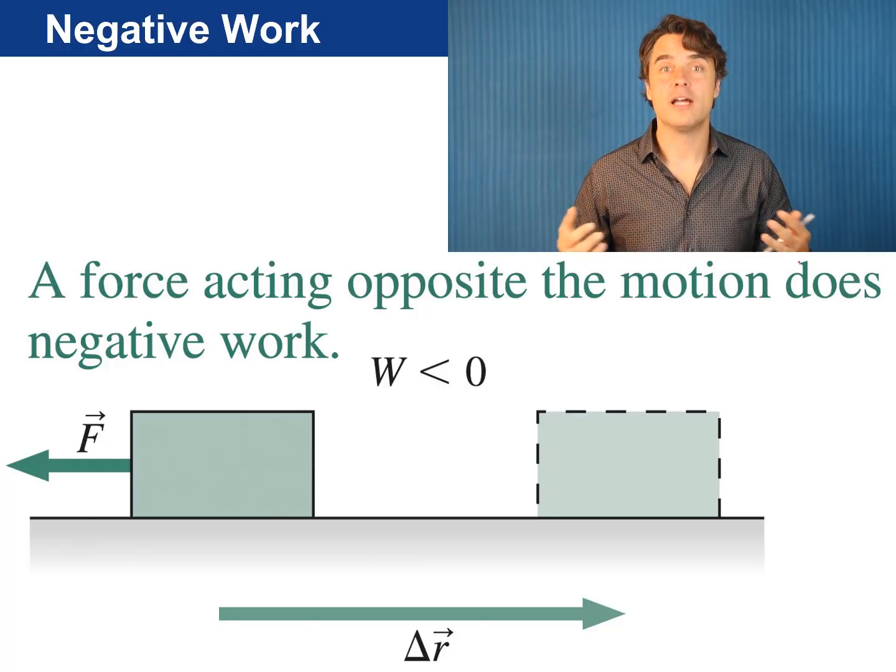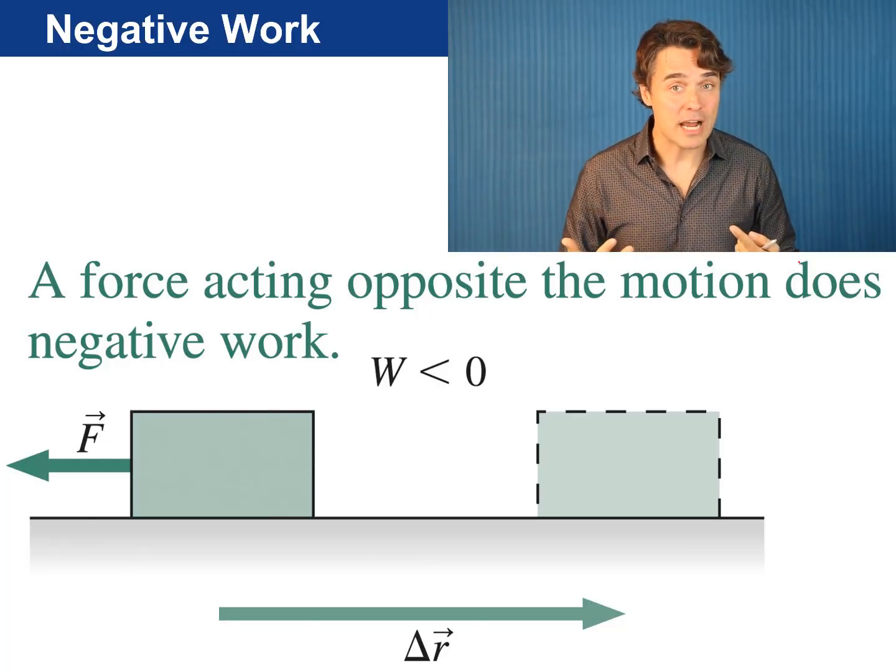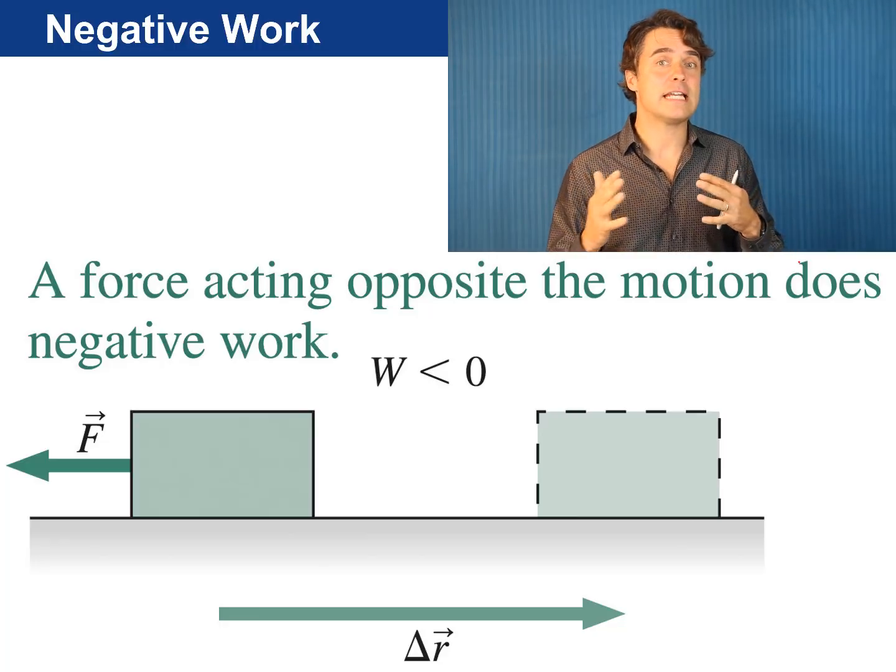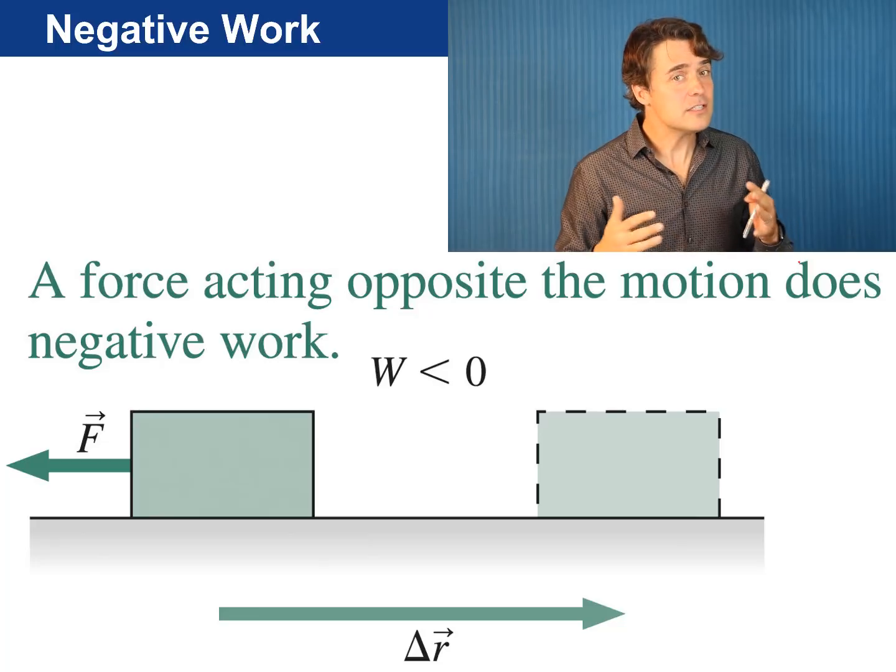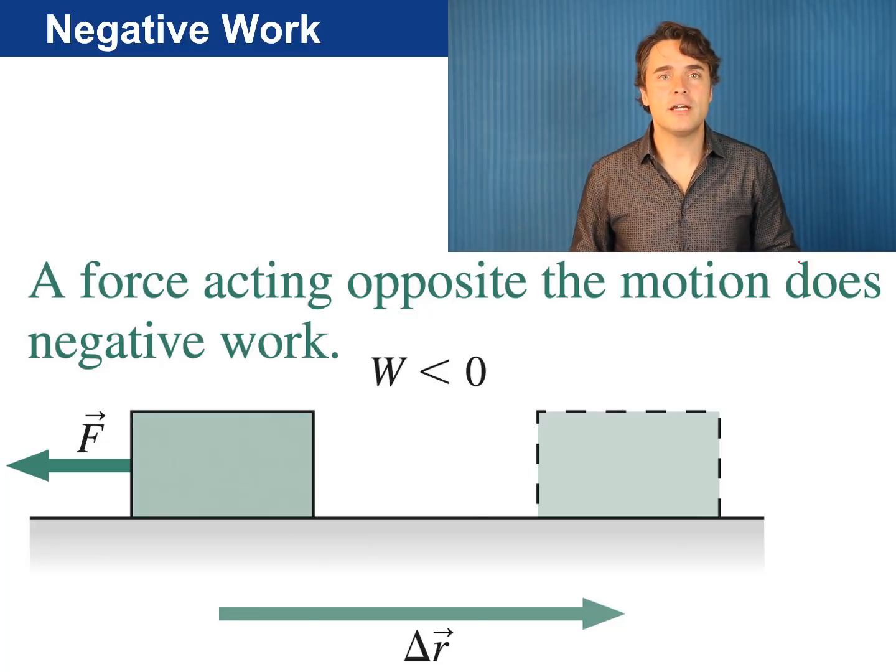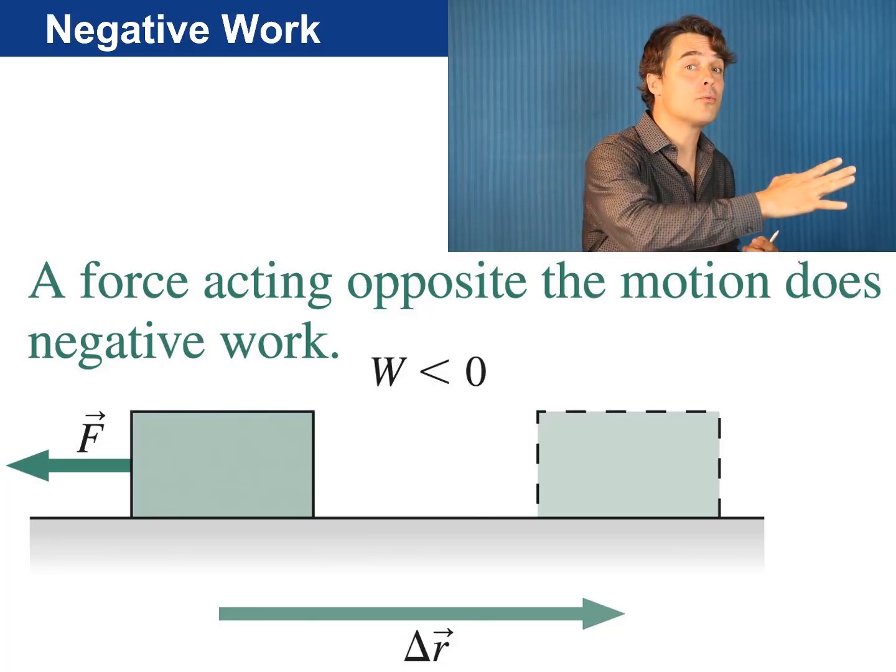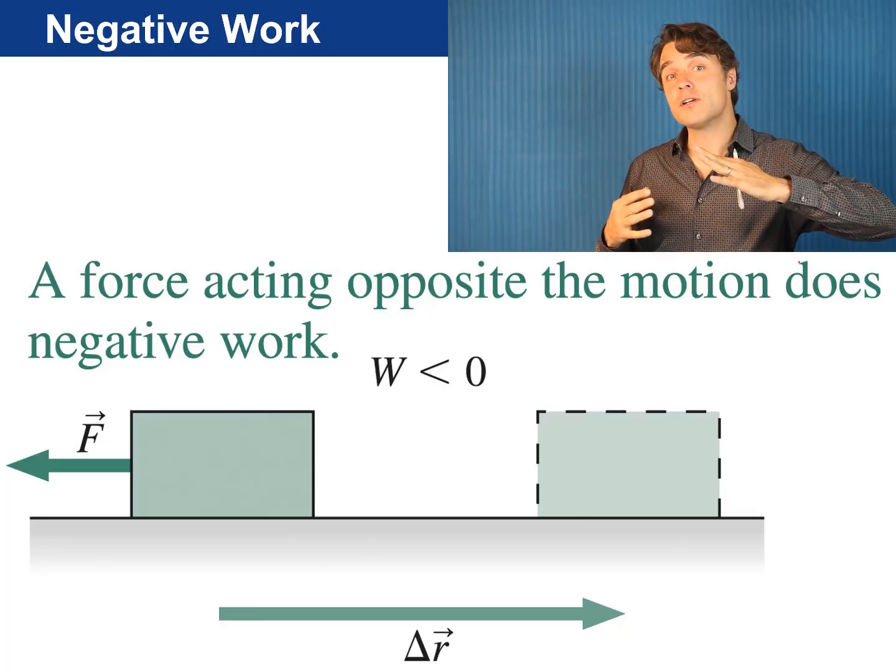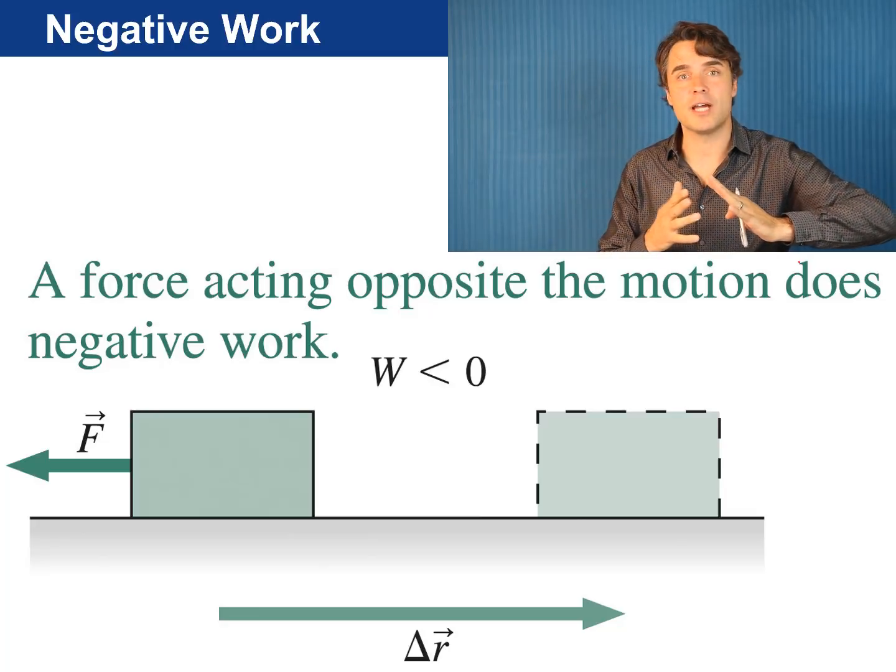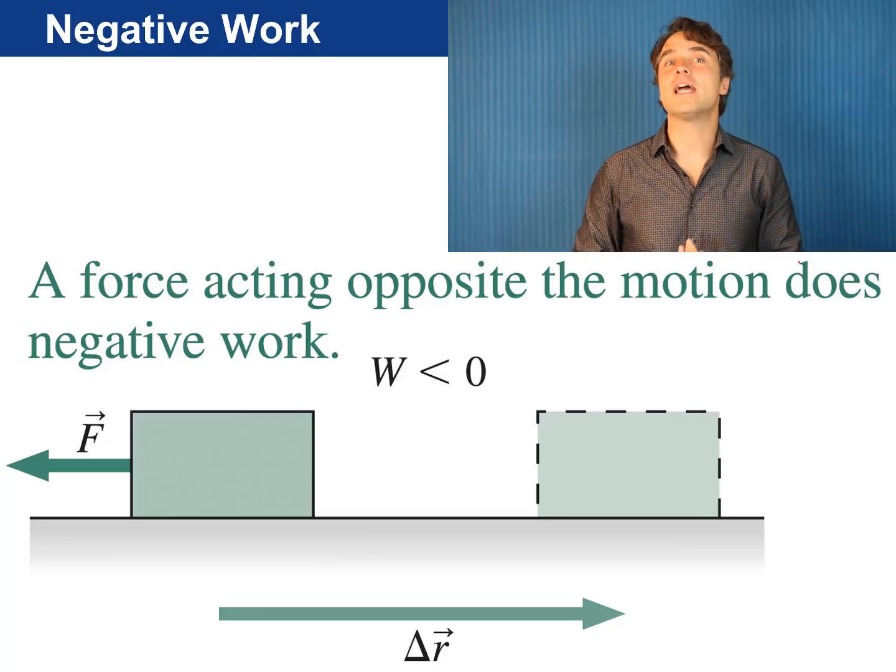Negative work means that the displacement and the force are in opposite directions or the force at least has a negative component in the direction of the displacement. This could happen if as shown here the object had an initial velocity to the right and the force was to the left. In this case the force is trying to slow down the object so it's kind of subtracting energy which corresponds to doing negative work.